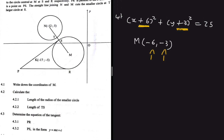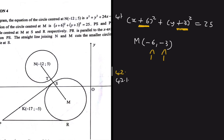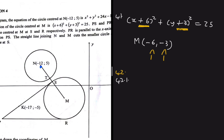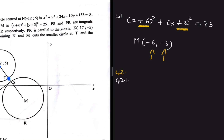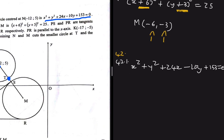Now for question 4.2.1, we need to find the length of the radius of the smaller circle. The radius is NT. We don't have the coordinates of T, so we can't use the distance formula directly. But we are given the equation of the small circle: x² + y² + 24x − 10y + 153 = 0.